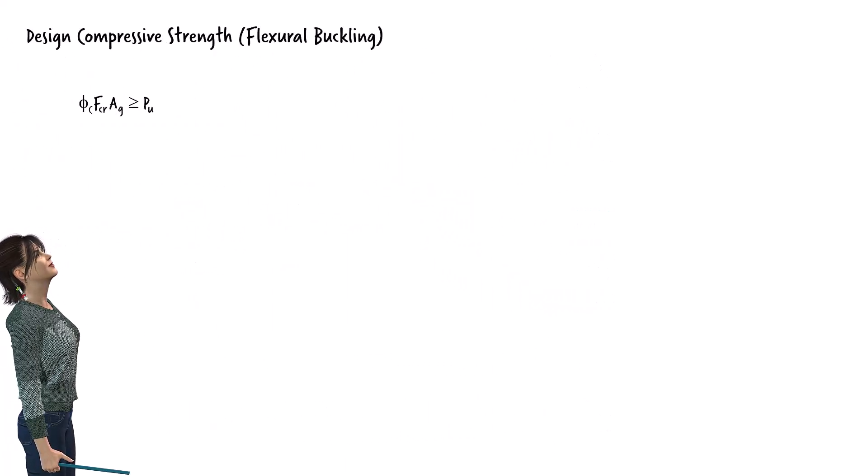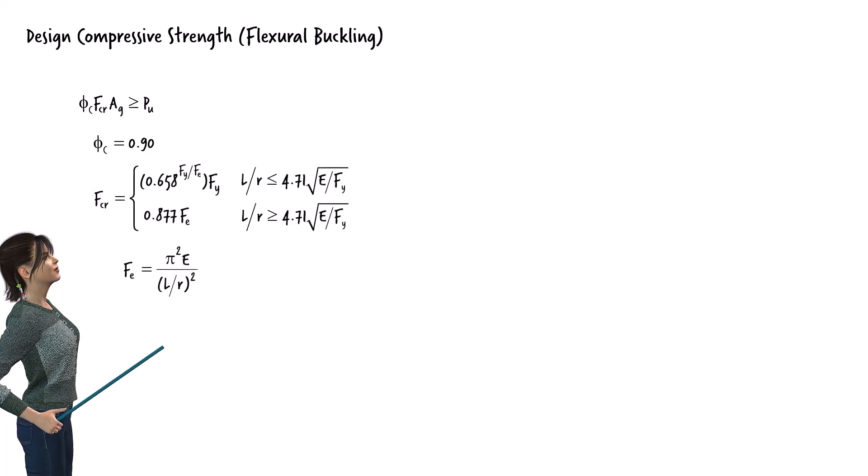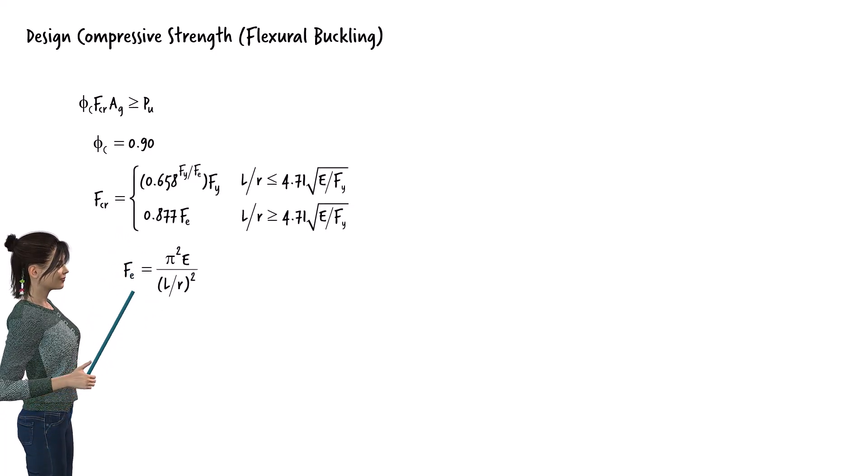To determine the design compressive strength of the member, we need to multiply the nominal buckling strength by the cross-sectional area and the strength reduction factor, theta-C. For buckling, theta-C is 0.9. F-C-R is given by this pair of equations, where F-E is the Euler-buckling equation.